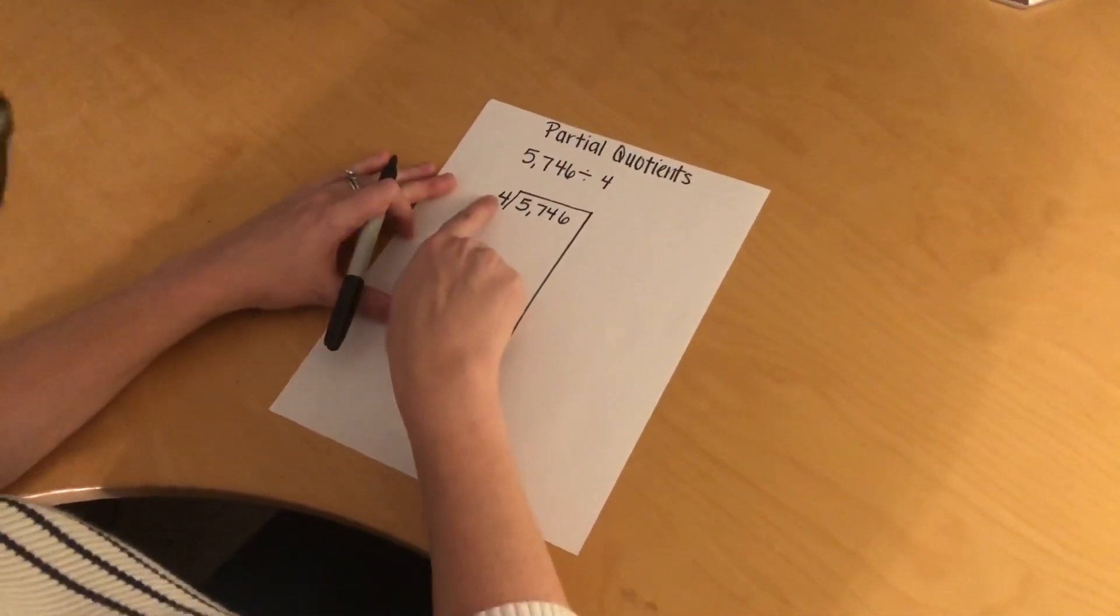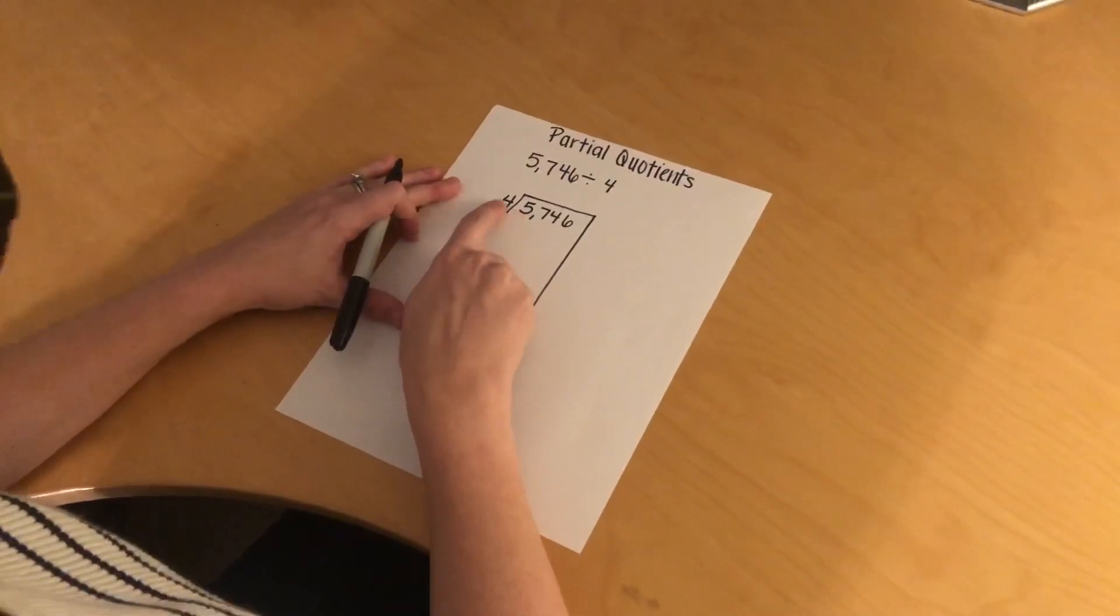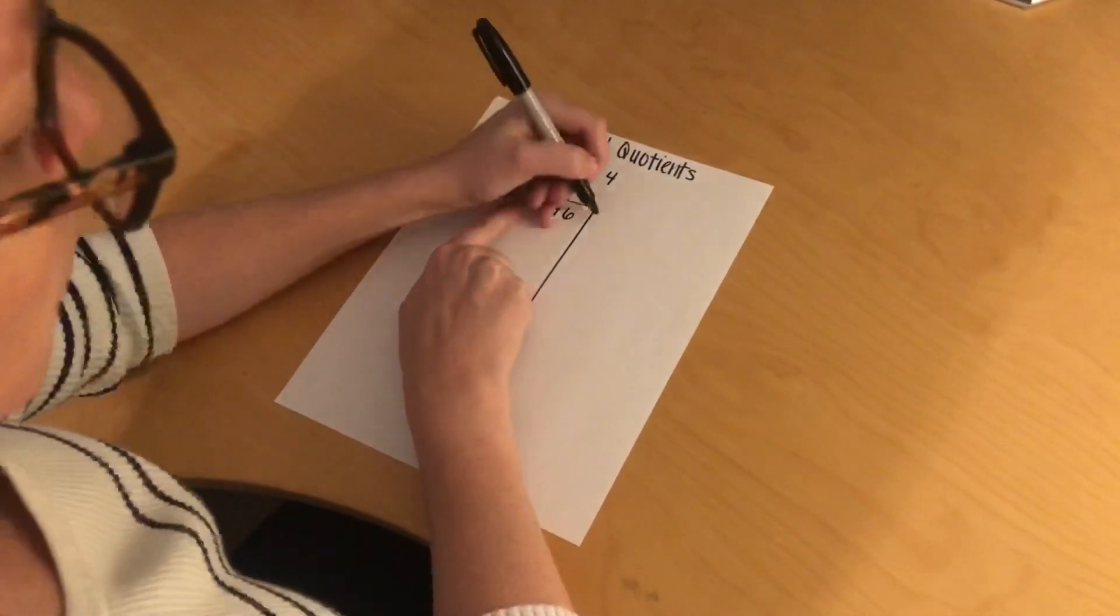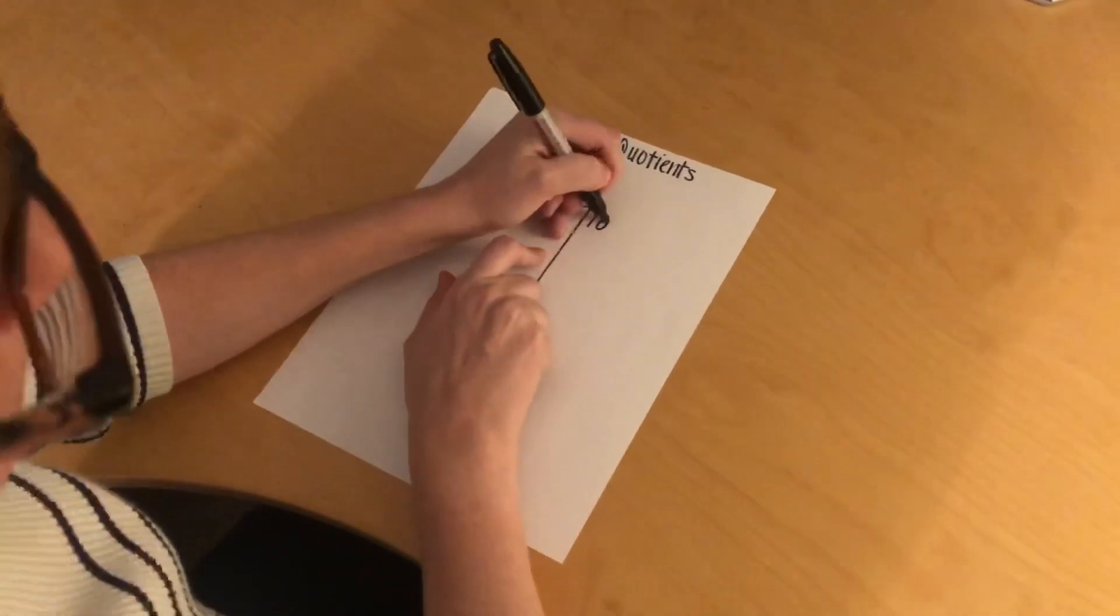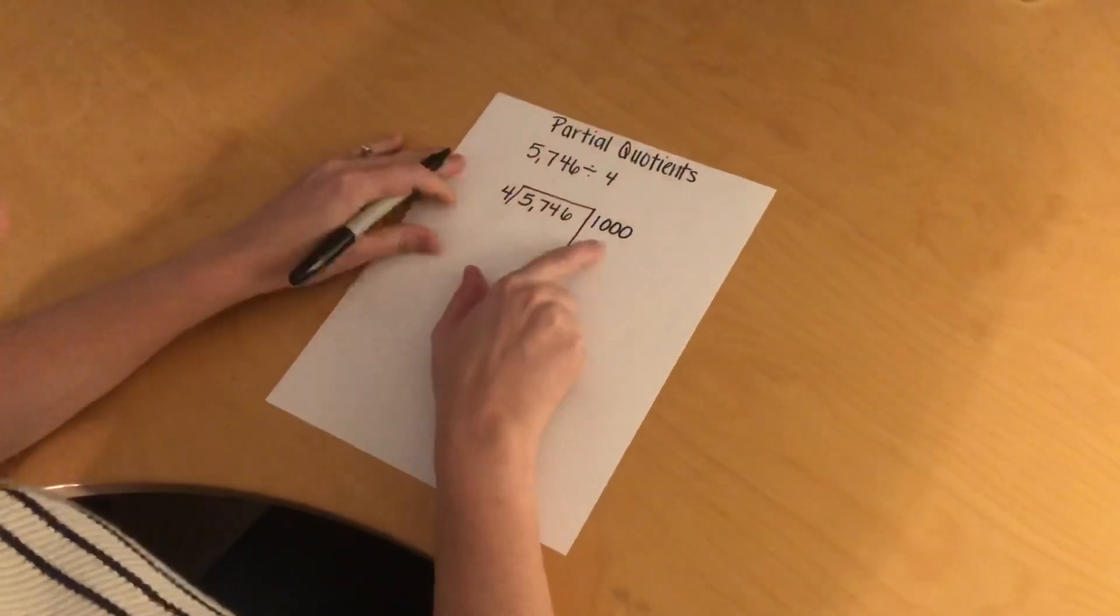So what I like to look at is how many times 4 goes into this first number, which is a 5. 4 can go into 5 one time, and then there are 3 digits after that 5, so I'm going to put 3 zeros after it, so it's actually 1,000.